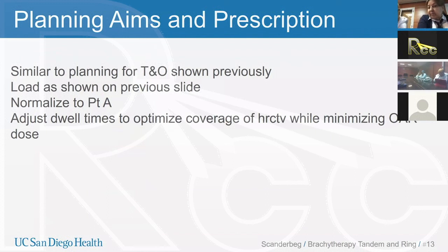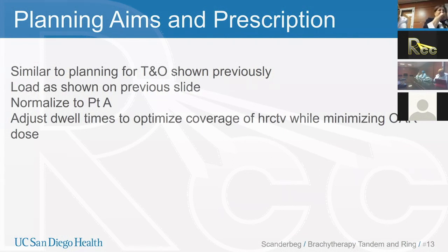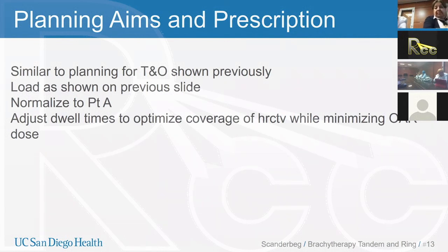The planning aims are the same as those described last week in the tandem and ovoid presentation. We start with loading as described, normalize to point A, keeping those ratios depending on source strength. From there, we tweak the dose to cover our HR-CTV appropriately while minimizing dose to organs at risk, using an iterative process going back and forth between our EQD2 spreadsheet and our plan.